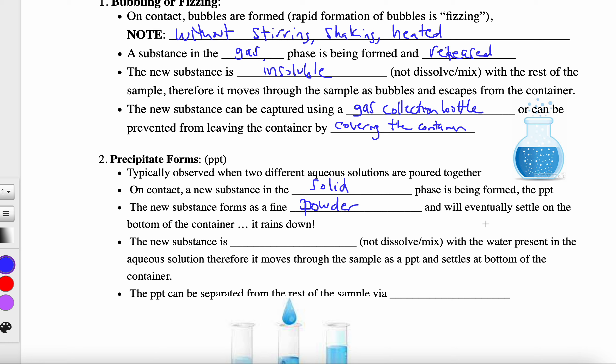It forms as a fine powder and will eventually settle on the bottom of the container, so it rains down. That new powdery solid will not dissolve or mix in that water solution. That new substance is insoluble, it won't dissolve or mix with the water present in the aqueous solution. It moves through the sample as a precipitate, rains down, and settles at the bottom. We can isolate that precipitate simply by filtering it.